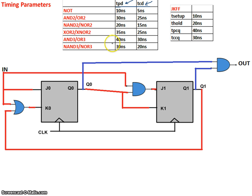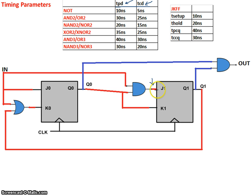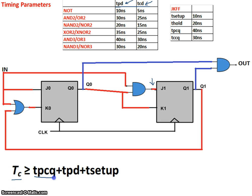We have two timing parameters. First is the setup constraint, which basically says that on the edge of a clock, to make sure that the data is ready to be set up on the next clock to go into this flip-flop, the data must come through the first flip-flop, pass through the combinational logic, and arrive before the setup time of the second flip-flop. That is given by: t_clock ≥ propagation delay of the first flip-flop + propagation delay of the largest combinational path + setup time of the receiving flip-flop.